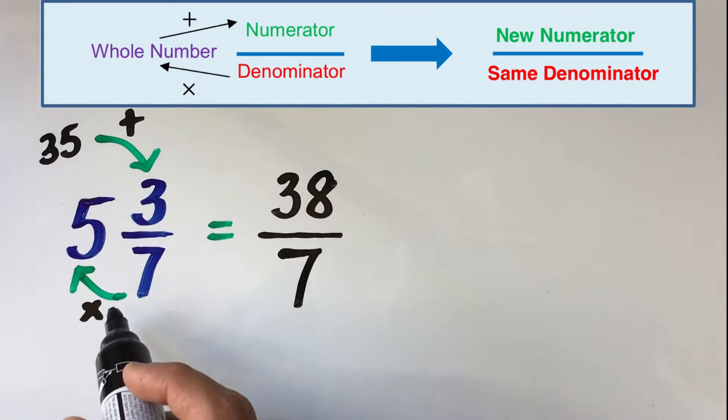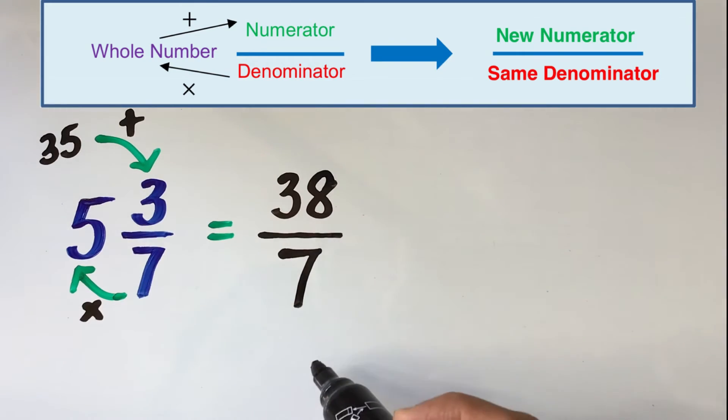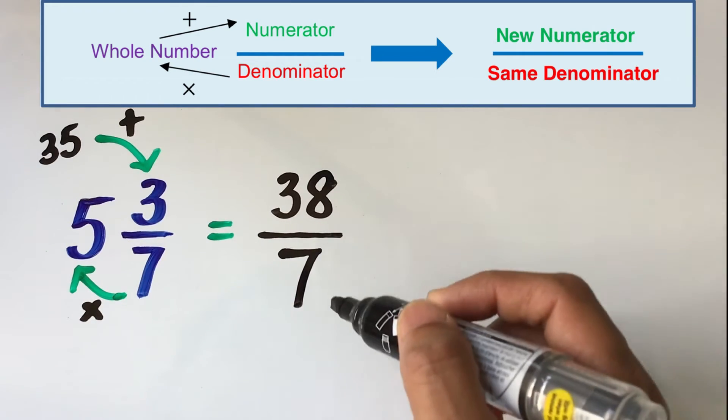And we keep the denominator of the improper fraction the same as the fraction part of the mixed fraction. So the mixed fraction 5 whole 3 over 7 is same as the improper fraction 38 over 7.